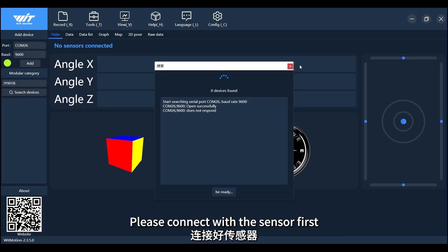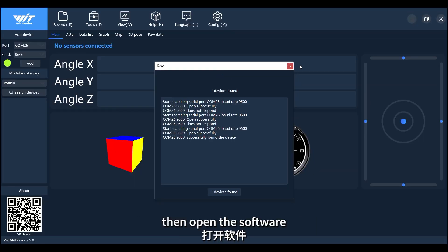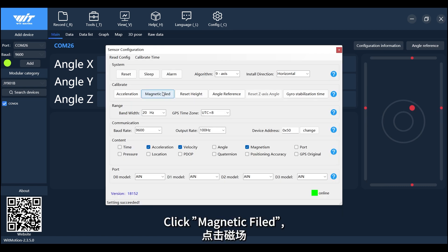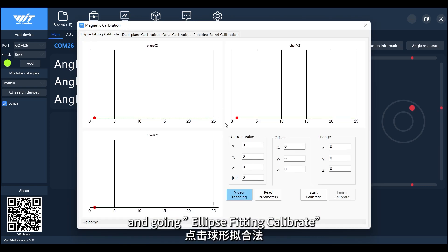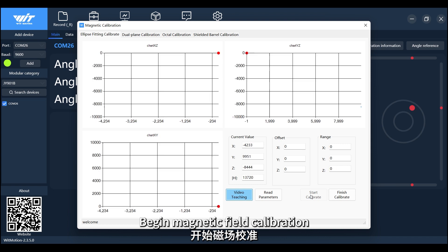Please connect with the sensor first, then open the software. Click configuration, click magnetic field, and go in ellipse fitting calibrate. Click start calibrate to begin magnetic field calibration.